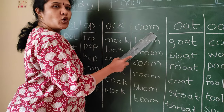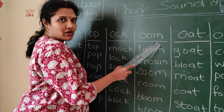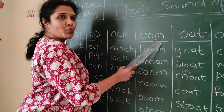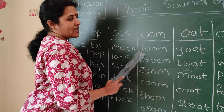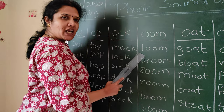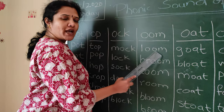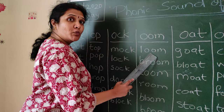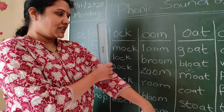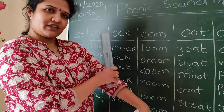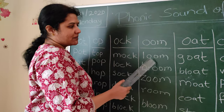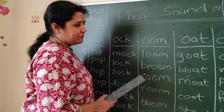Next sound: OOM. L plus OOM is LOOM. L-O-O-M — LOOM. Loom means cloth — the factory where they make cloth is called a loom.